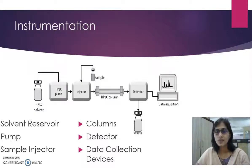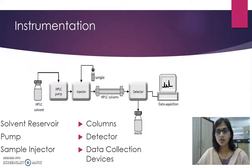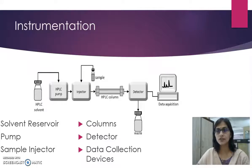Columns are usually made of polished stainless steel and are between 10 to 30 cm long and have an internal diameter of between 4 and 5 mm. They are commonly filled with a stationary phase with a particle size of 3 to 10 micrometers.